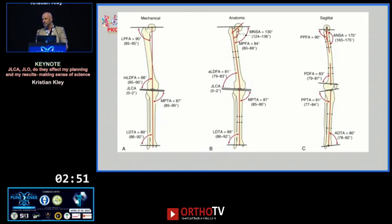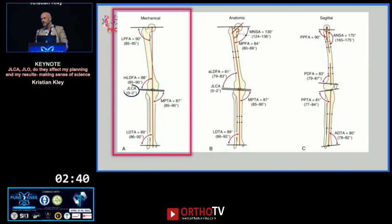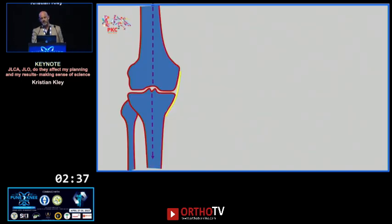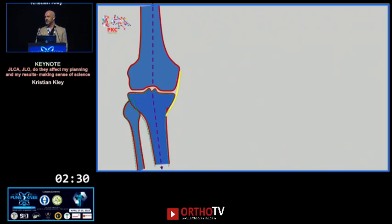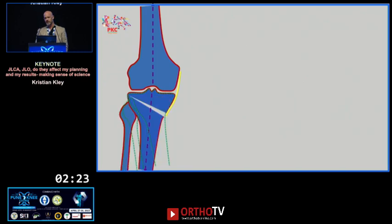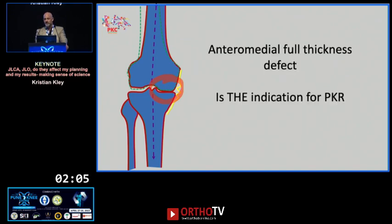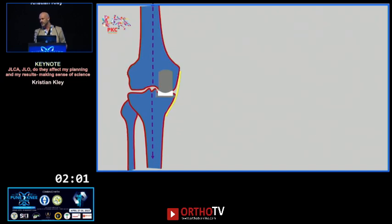Now, what about the joint line convergence angle? Malalignment can be in the femur, the tibia, in both, or in neither — because it could be the joint line convergence angle itself. Importantly, a metaphyseal deformity is the number one indication for an osteotomy, because nothing is more logical than correcting something abnormal back to normal. However, the malalignment can also be intra-articular, in which case the treatment of choice would actually be unicondylar replacement.